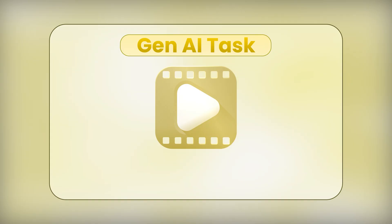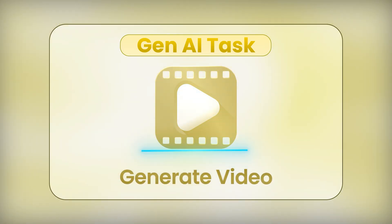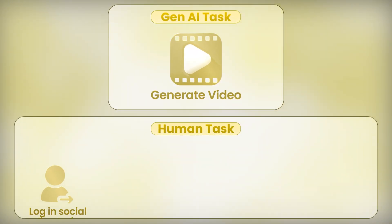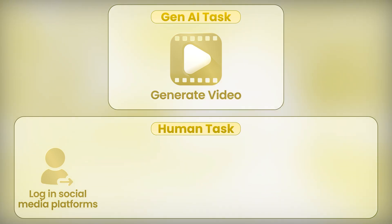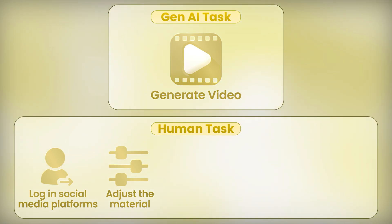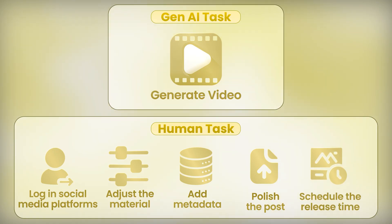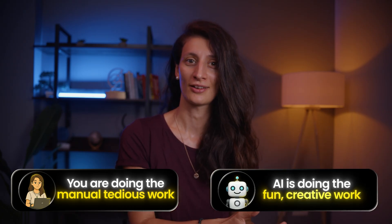Another example: think of a beautiful video or social media post that AI generated for you. Now you need to log in to all your social media platforms, adjust the material slightly for each platform, do the editing, the final tweaks and touches, the metadata, polish the post, schedule the release time. So you are doing the manual tedious work while AI is doing the fun creative work. The roles get flipped — AI is the brainstorming person while you're stuck doing all the tedious robotic work.